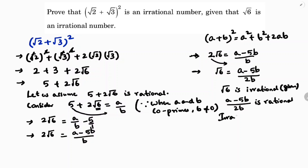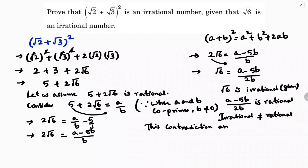But √6 is given to be irrational, and (a − 5b)/(2b) is rational. So irrational cannot be equal to rational — this is a false statement. This contradiction arises because of our assumption that 5 + 2√6 is rational.